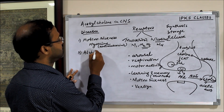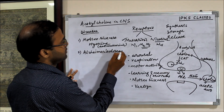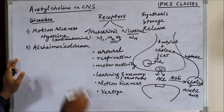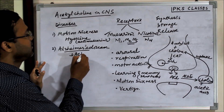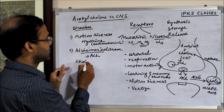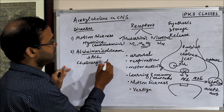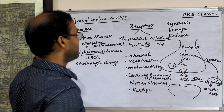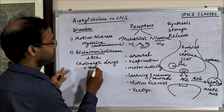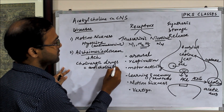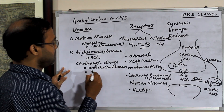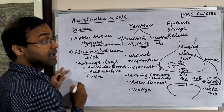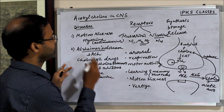In Alzheimer's disease, which is a neurodegenerative disease concerned with memory, the acetylcholine level is decreased. So we can give cholinergic drugs — specifically inhibitors of the acetylcholinesterase enzyme — so that the acetylcholine level increases. These anticholinesterase drugs are useful in Alzheimer's disease.